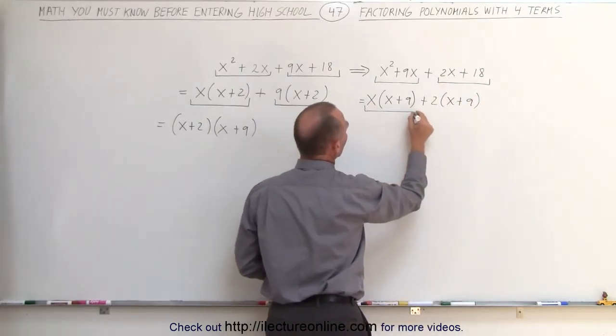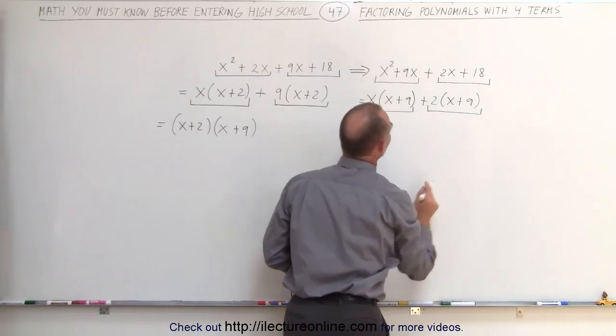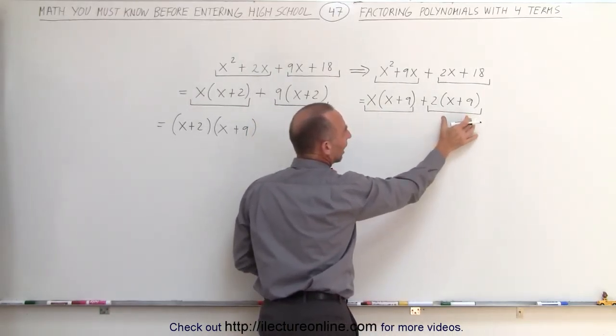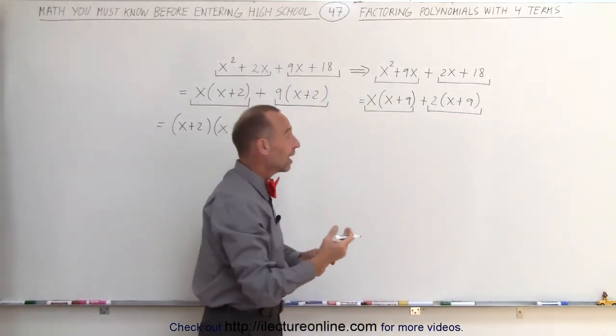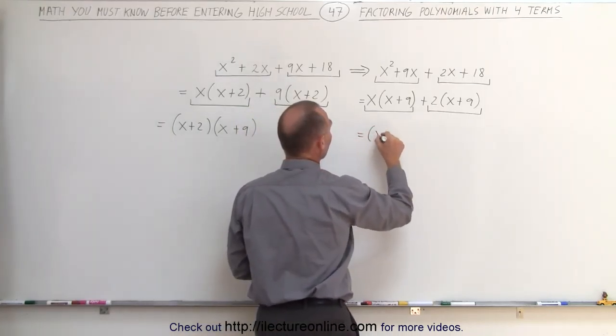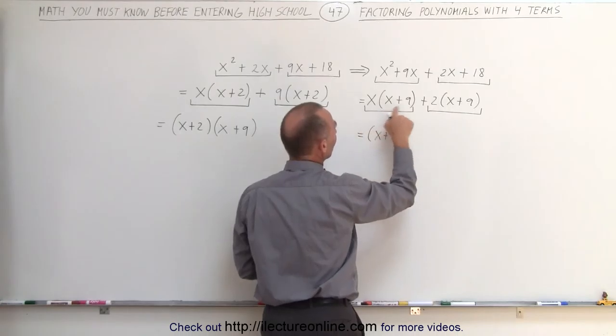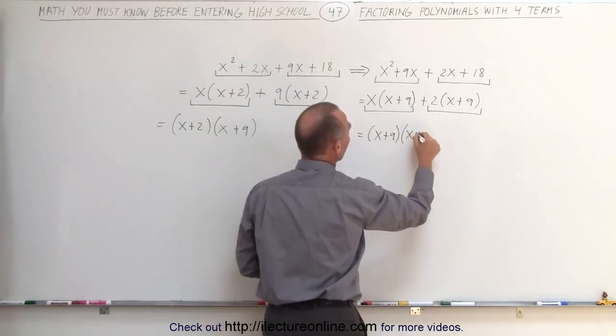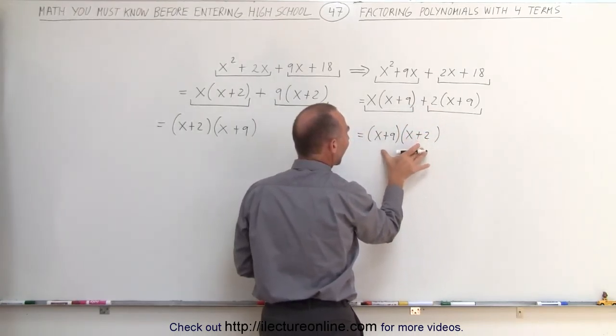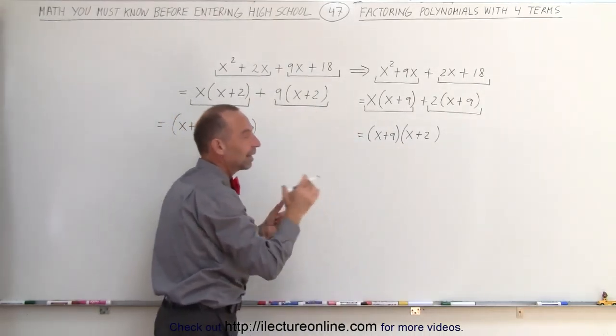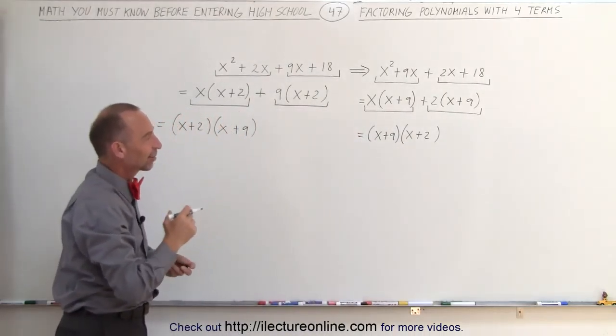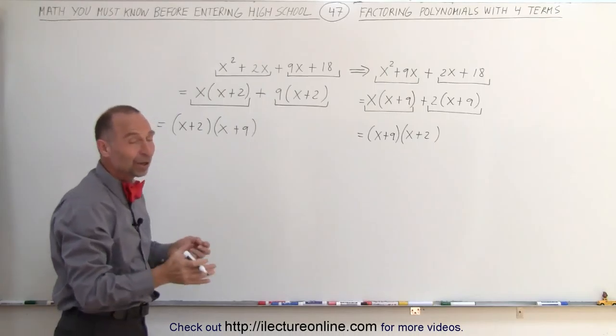Again we put brackets underneath here, and notice we have (x + 9) and (x + 9). We can factor out (x + 9), so this is equal to (x + 9) times what we have left, which is (x + 2). Notice we end up with the exact same answer that we got before, except (x + 9) is written first and (x + 2) is written next. But it doesn't matter what the order is—it's exactly the same answer.